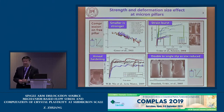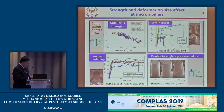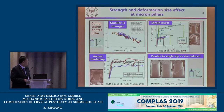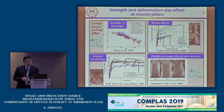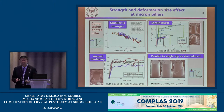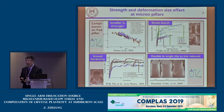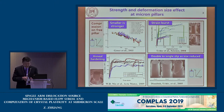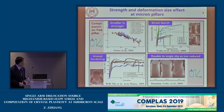Ten years later, in 2004, experiments from UNIC performed compression on micropillars. For bulk materials at 40 or 20 microns, there is no size effect because there is no strain gradient. But if we reduce the size from 10 microns to 5 microns, we can find a size effect even without strain gradient. The curve confirms: smaller is stronger.